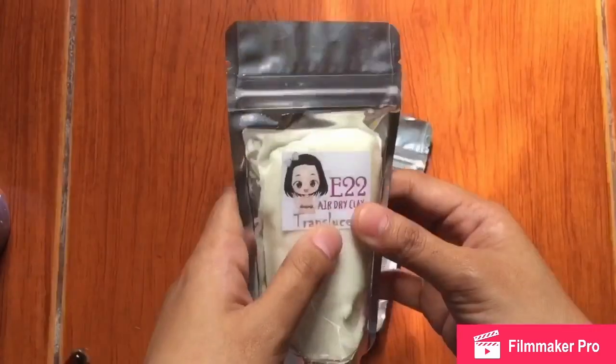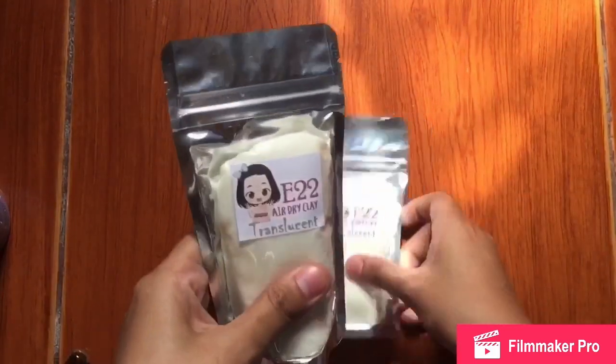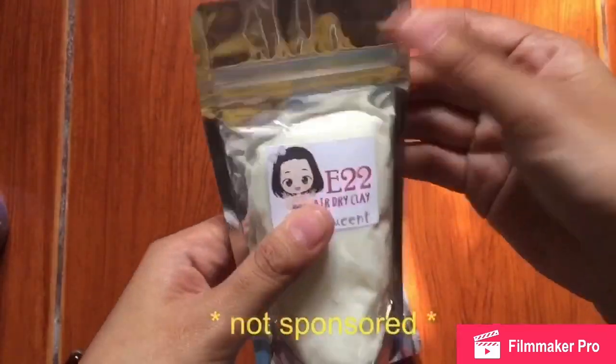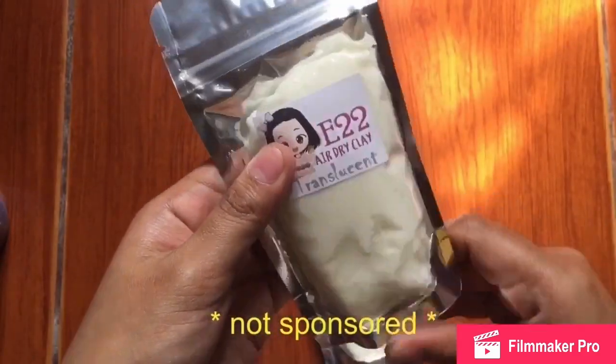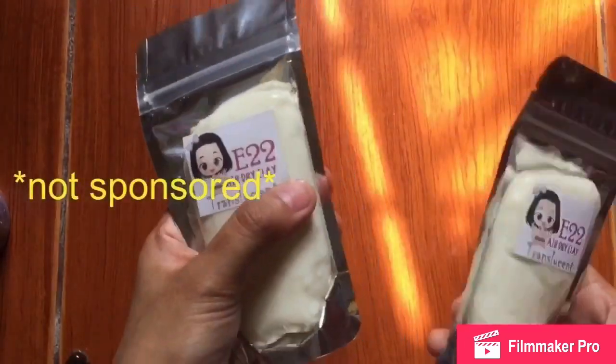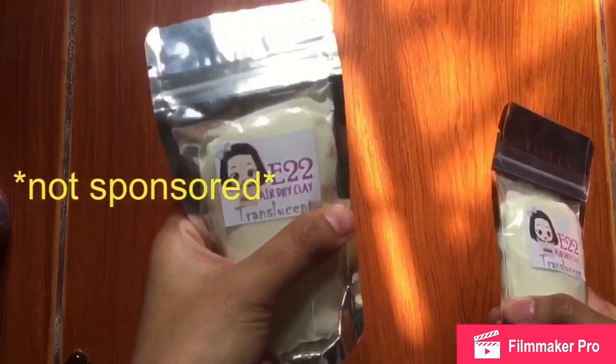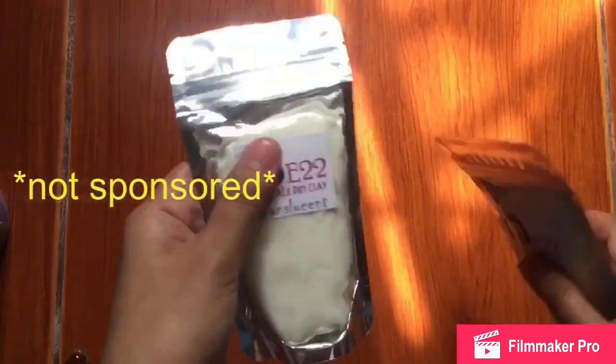I ordered my air dry clay translucent. I don't order the colored air dry clay. So this one, it comes in a pouch, it's a ziploc, and they can go for 55 grams to 100 grams. It actually depends on your project or how much clay you use.